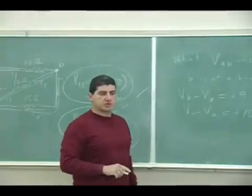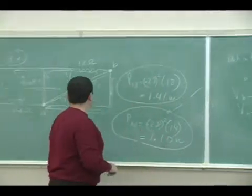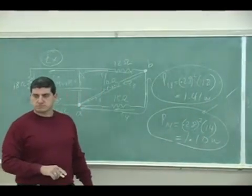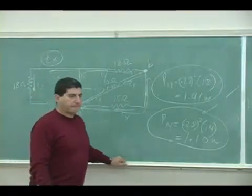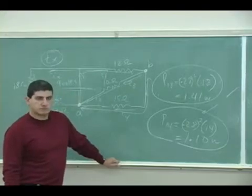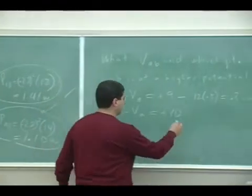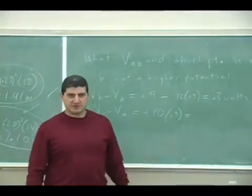So what was the current going through that? Did we calculate that? It was what? Point three. Point three. So I should get three volts, right?